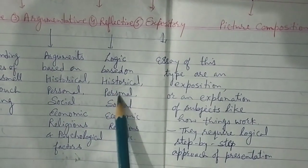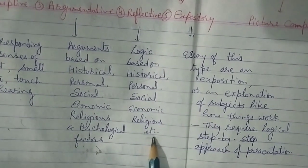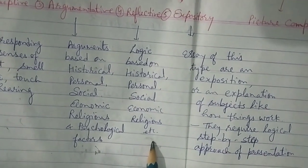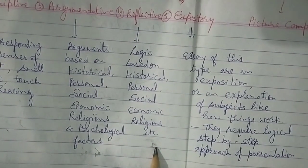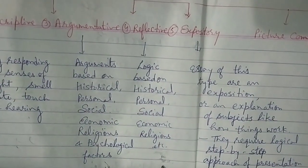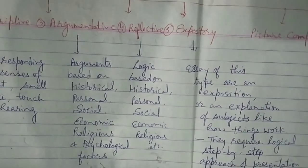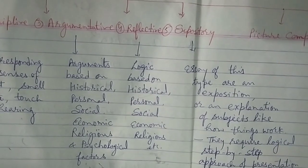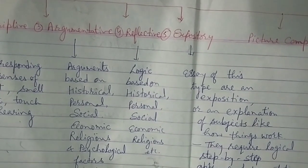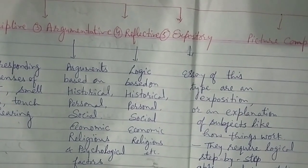Reflective essays are based on historical, personal, social, economic, religious, and psychological factors. These types of essays are reflective thoughts on some topic, covering topics based on social, political, and domestic issues like education, poverty, and democracy. Methodology: justify your point of view using historical, personal, social, religious, and psychological factors.